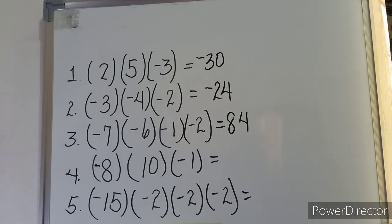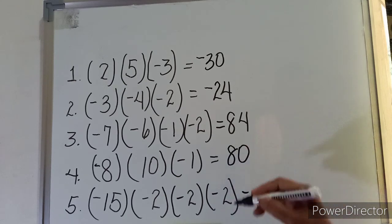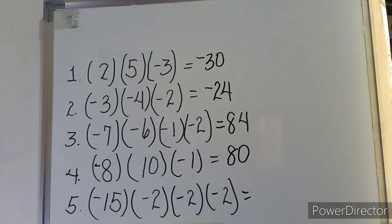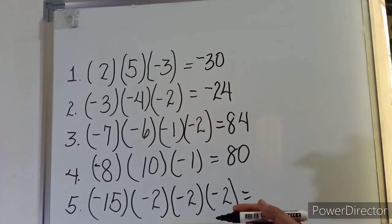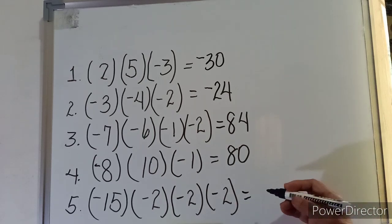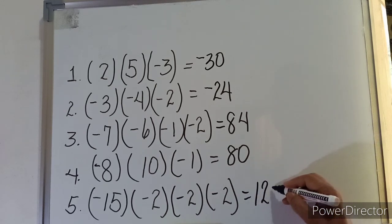Example four: negative eight times ten is negative eighty, times negative one equals positive eighty. Final example: negative fifteen times negative two is positive thirty, times negative two equals negative sixty, and negative sixty times negative two equals positive one hundred twenty.